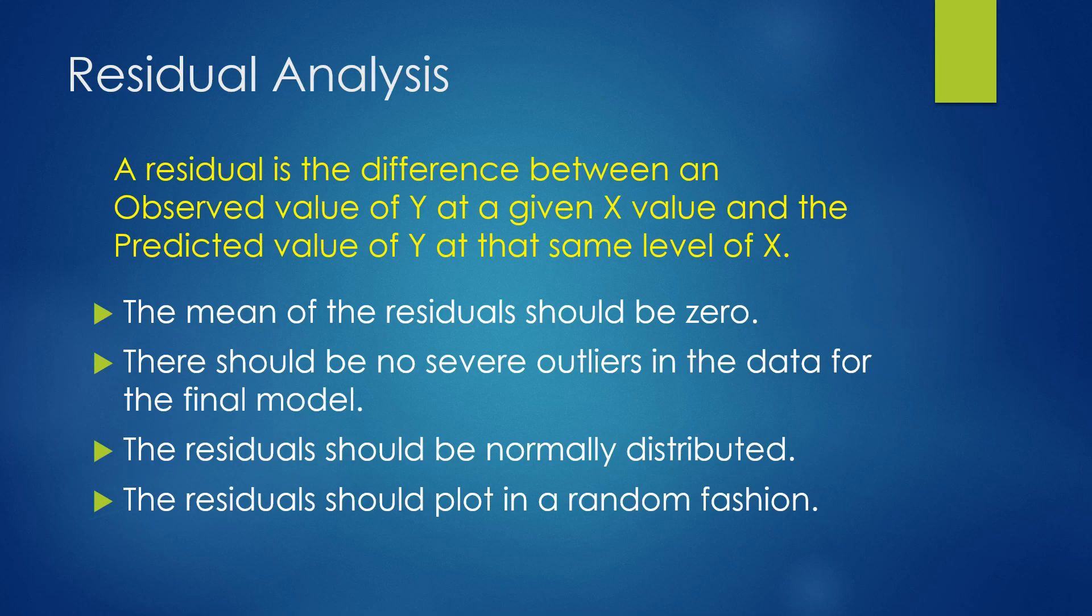Next, we'll do something called residual analysis. A residual is the difference between an observed value of y at a given x and the predicted value of y at that same level of x. This will all make so much more sense when we actually look at an example. The mean of the residuals is always 0. We should not see severe outliers in our data for the final model. The residuals should be normally distributed. Typically, if there are no severe outliers, we can assume it's normal. And the residuals should also plot in a random fashion. So they should look like a shotgun target.